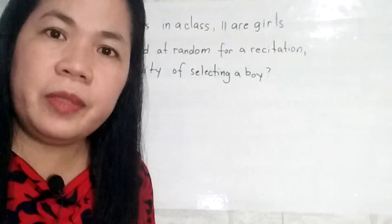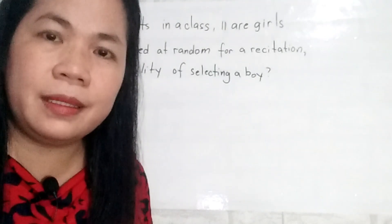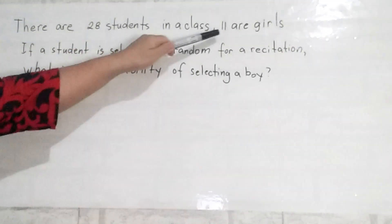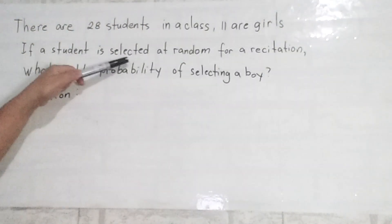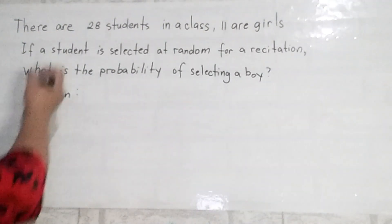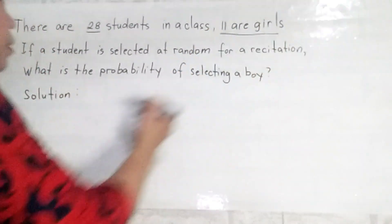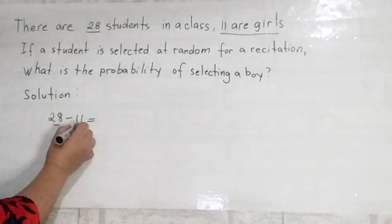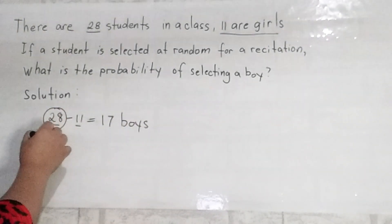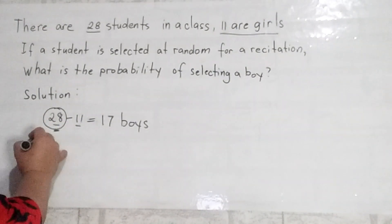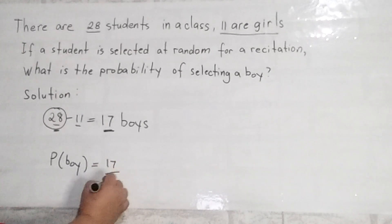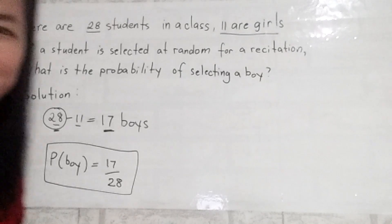If you can answer problems regarding tossing a coin, rolling a die, and probability with a deck of cards, then you can answer this kind of question easily. There are 28 students in a class and 11 are girls. If a student is selected at random for recitation, what is the probability of selecting a boy? There are 28 students and 11 girls, so 28 minus 11 equals 17 boys. Our sample space is 28, so the probability of choosing a boy is 17 divided by 28.